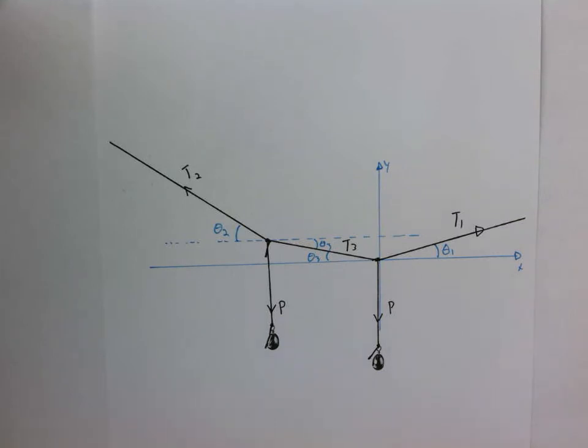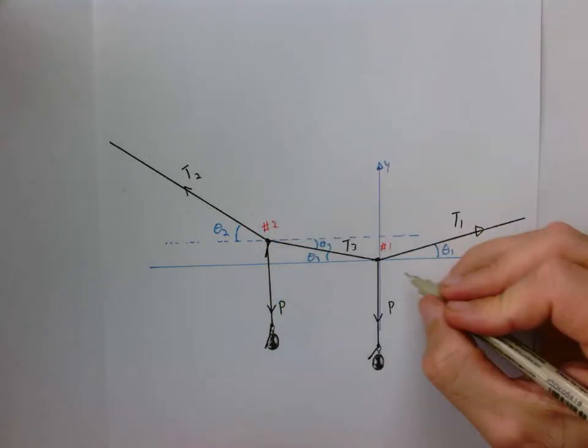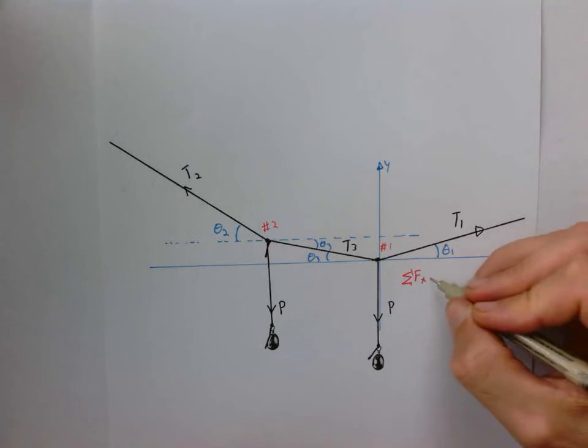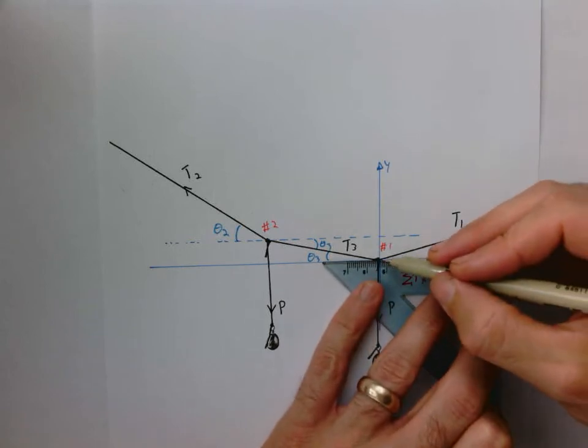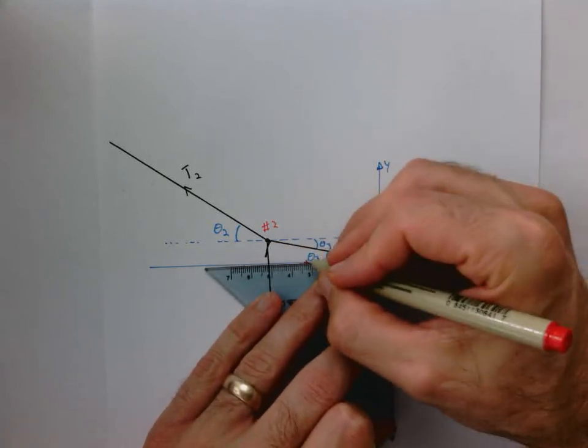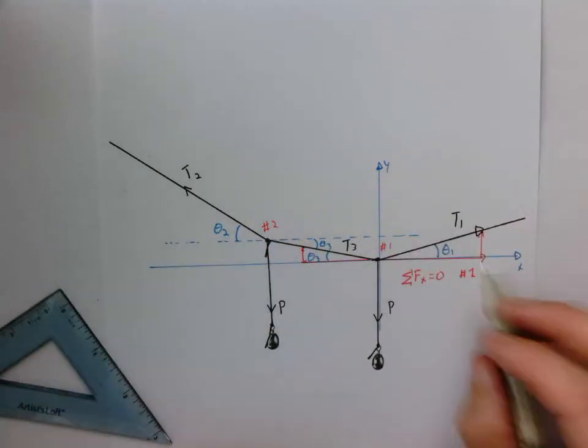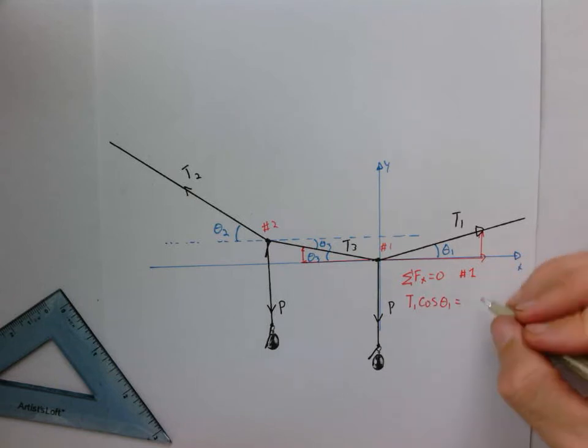So let's just tackle this the way we would without using graphics, which is just summing the forces in the x and y direction at each node. We have node number one, node here number two. Let's start with the sum of the forces in the x direction need to equal zero at node number one. It means that the x component of T1 here needs to balance the x component of T3. So the way we would write that out is that T1 times the cosine of θ1 equals T3 times the cosine of θ3.